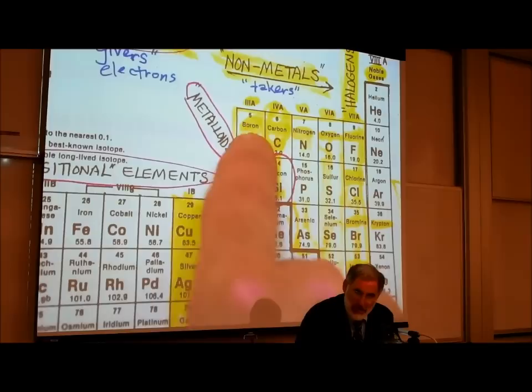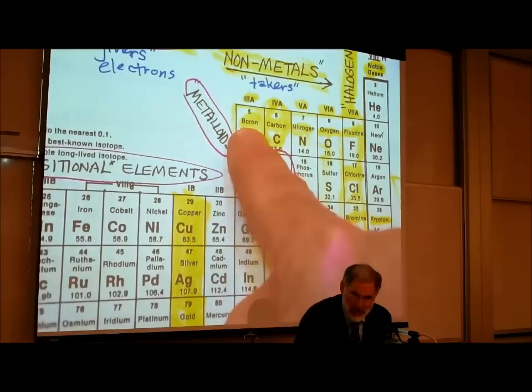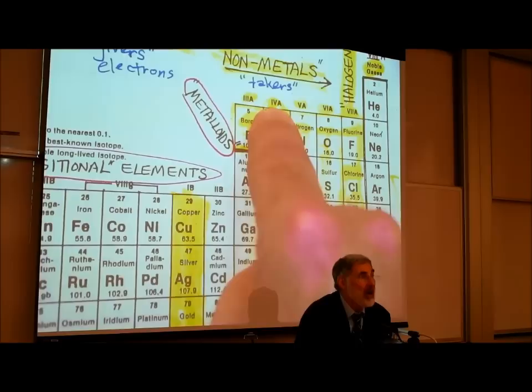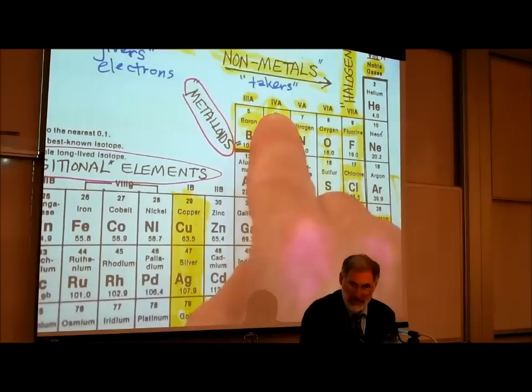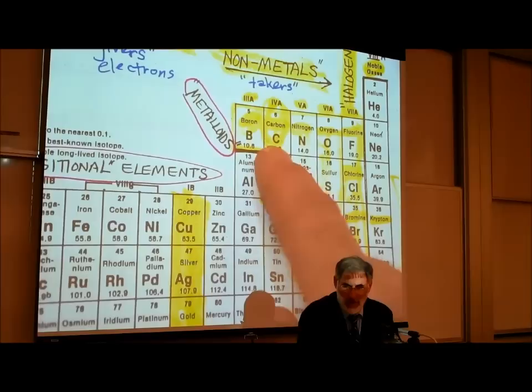This vertical column of elements with similar chemical properties is commonly called the boron family. Column four — Roman numeral IV — contains elements that all have four electrons in their outer orbit and therefore have similar chemical properties: carbon, silicon, germanium. It's commonly known as the carbon family.